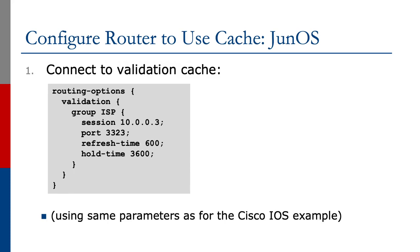For Juniper, the configuration is somewhat different. Cisco has tried to make it as easy as possible for the network operator, and we'll look at some of the issues this causes a bit later on. Juniper also makes it relatively easy for the user, but nothing is automatic. The first thing we have to do, as shown on the slide, is to configure the connection to the validation cache.